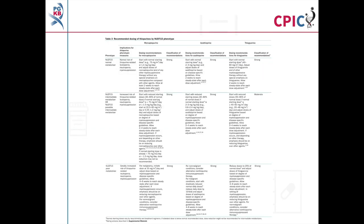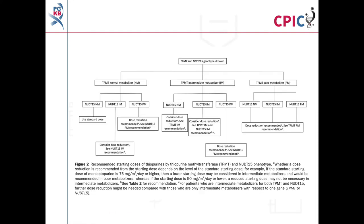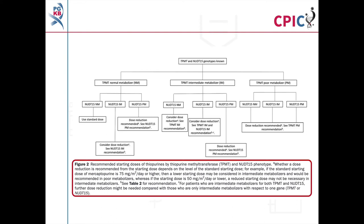The dosing recommendations for azathioprine by NUDT15 phenotype, in addition to those for mercaptopurine and thioguanine, can be found in Table 3 of the guideline. Detailed footnotes pertaining to the recommendations can be found at the bottom of this table. Figure 2 in the guideline shows how to select an appropriate prescribing action if both the TPMT and NUDT15 genotypes of a patient are known. Detailed footnotes are given in the figure legend.